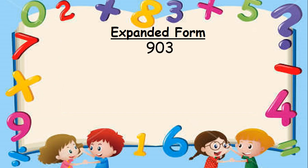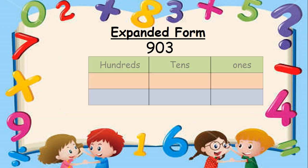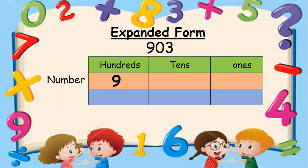Look at the number 903. Let us write the number 903 in the place value chart — number 9 in the hundreds place, 0 in the tens place, and 3 in the ones place. Step 2: we find the place value of each digit. Now tell me the place value of 9. Yes, 900.